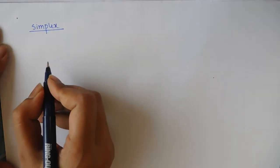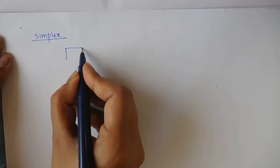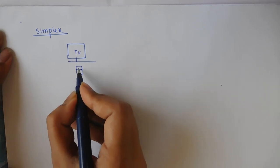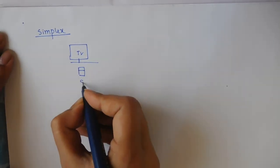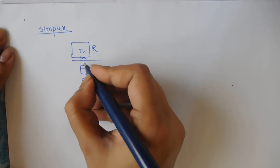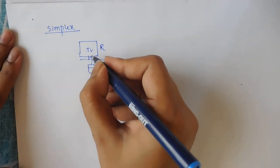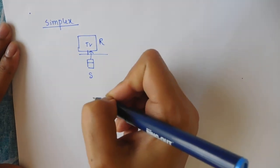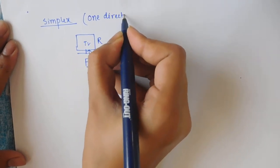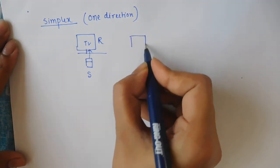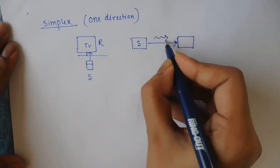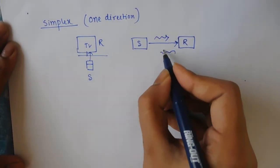For simplex, it is one directional. Suppose you are watching TV and changing the channel with a remote — the remote is the sender and your TV is receiving the signal. It is always one directional because your TV cannot send a signal back to the remote. So a sender always sends a signal to the receiver only.